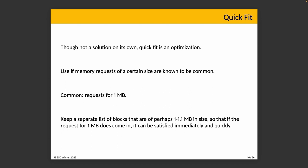Quick fit is really an optimization rather than a core strategy. If memory requests of a certain size are very common — for example, one megabyte — it might be beneficial to keep a separate list of blocks of that size, say 1 to 1.1 megabytes, so we don't have to search and can just take the first available block.